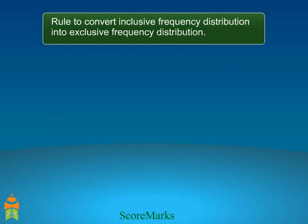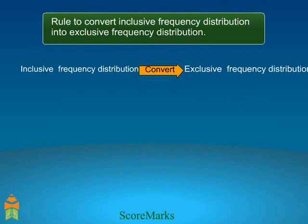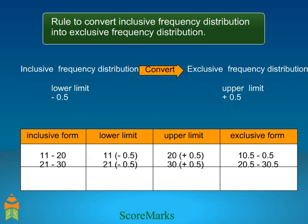When the data is expressed in the inclusive form, it is converted to exclusive form by subtracting 0.5 from the lower limit and adding 0.5 to the upper limit of each class interval. For example, 11 to 20 in inclusive form can be expressed as 10.5 to 20.5, which is the exclusive form of the data.